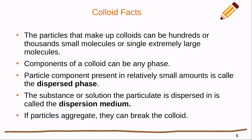Components of a colloid can be any phase. Just like we had the solvent-solute convention for solutions, we have something similar for colloids. The particle component present in relatively small amounts is called the dispersed phase — this is the colloid equivalent of a solute. The substance the particle is dispersed in is called the dispersion medium, which is the colloid equivalent of the solvent. If the particles aggregate, they can break the colloid and form a suspension, just like when water particles in a cloud aggregate and come down as rain.